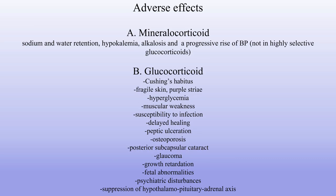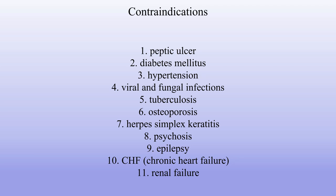Adverse effects. Mineralocorticoid adverse effects: sodium and water retention, hypokalemia, alkalosis, and progressive rise of blood pressure (not in highly selective glucocorticoids). Glucocorticoid adverse effects: Cushing's habitus, fragile skin, purple striae, hyperglycemia, muscular weakness, susceptibility to infection, delayed healing, peptic ulceration, osteoporosis, posterior subcapsular cataract, glaucoma, growth retardation, fetal abnormalities, psychiatric disturbances, suppression of HPA axis. Contraindications: peptic ulcer, diabetes mellitus, hypertension, viral and fungal infections, tuberculosis, osteoporosis, herpes simplex keratitis, psychosis, epilepsy, chronic heart failure, renal failure.